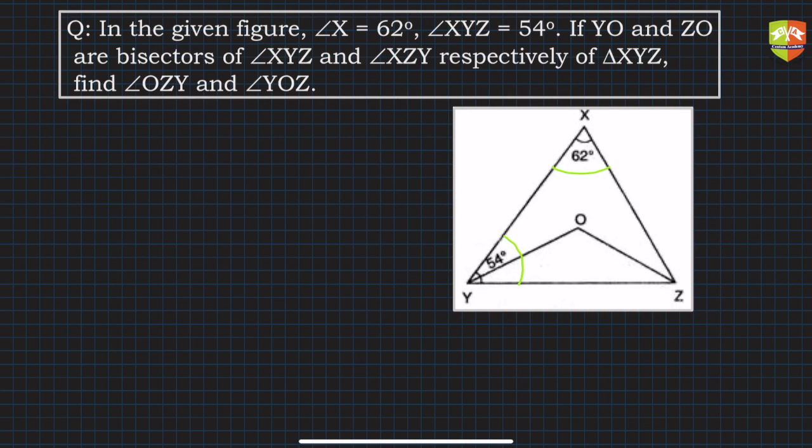If YO and ZO are bisectors of XYZ and XZY respectively, so this line YO bisects angle Y, so you can say that this angle is x and this angle also is x. Similarly, OZ bisects XZY, so if this is y, this is y. I hope this is clear.